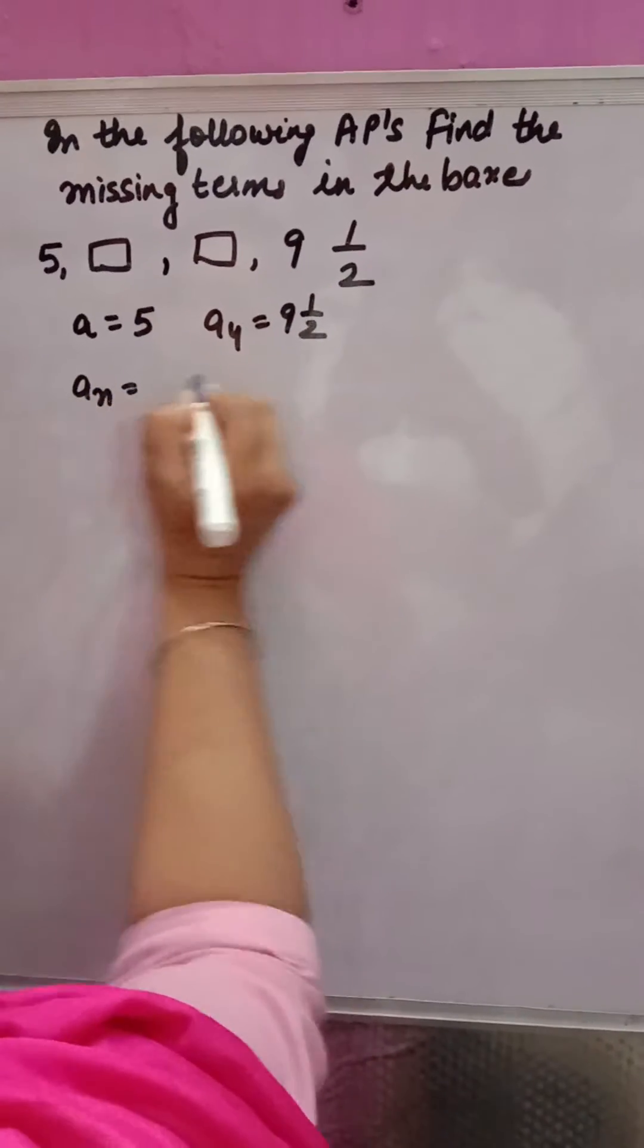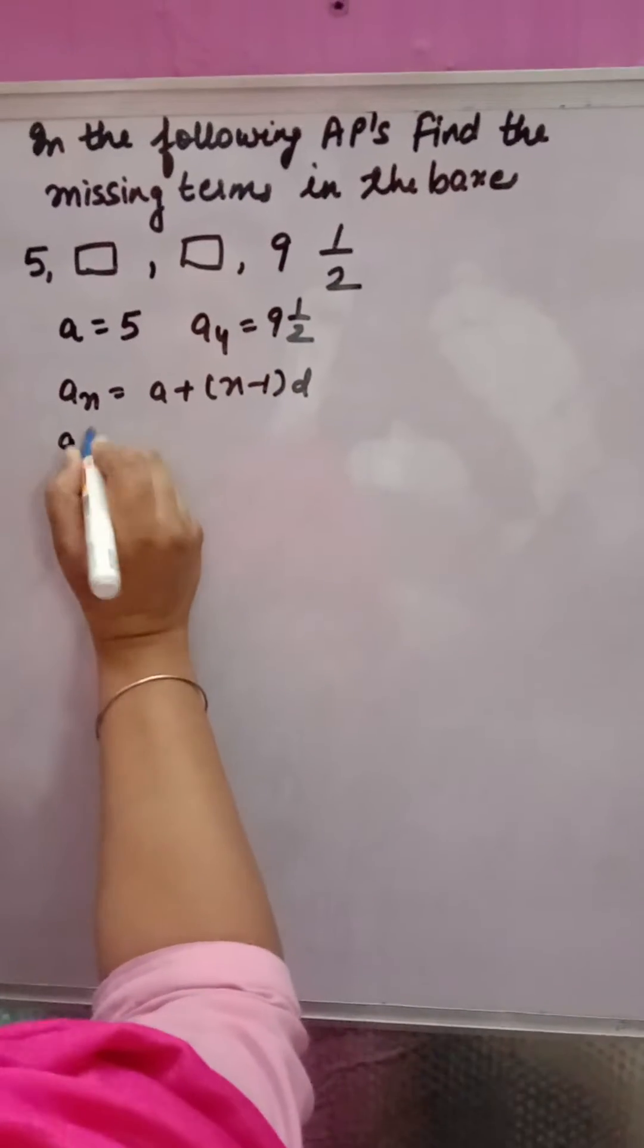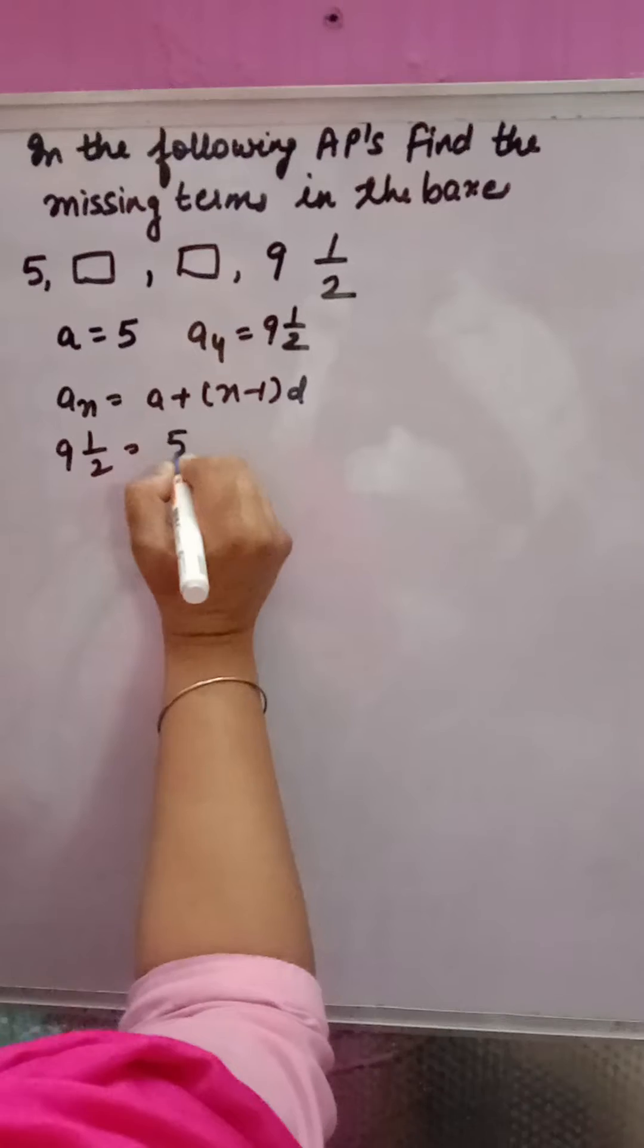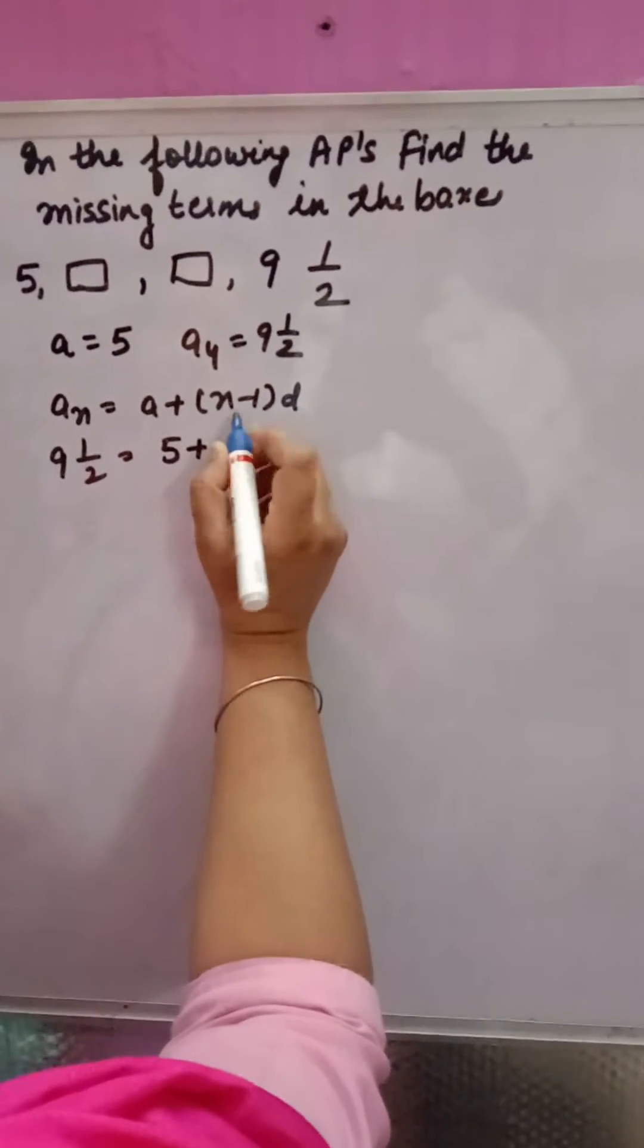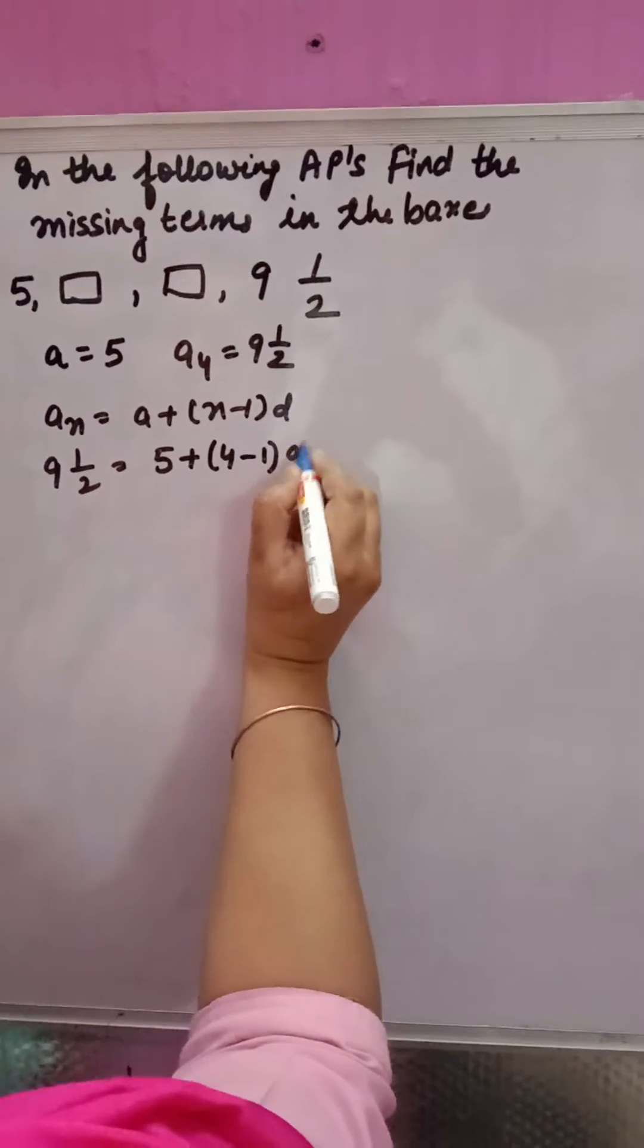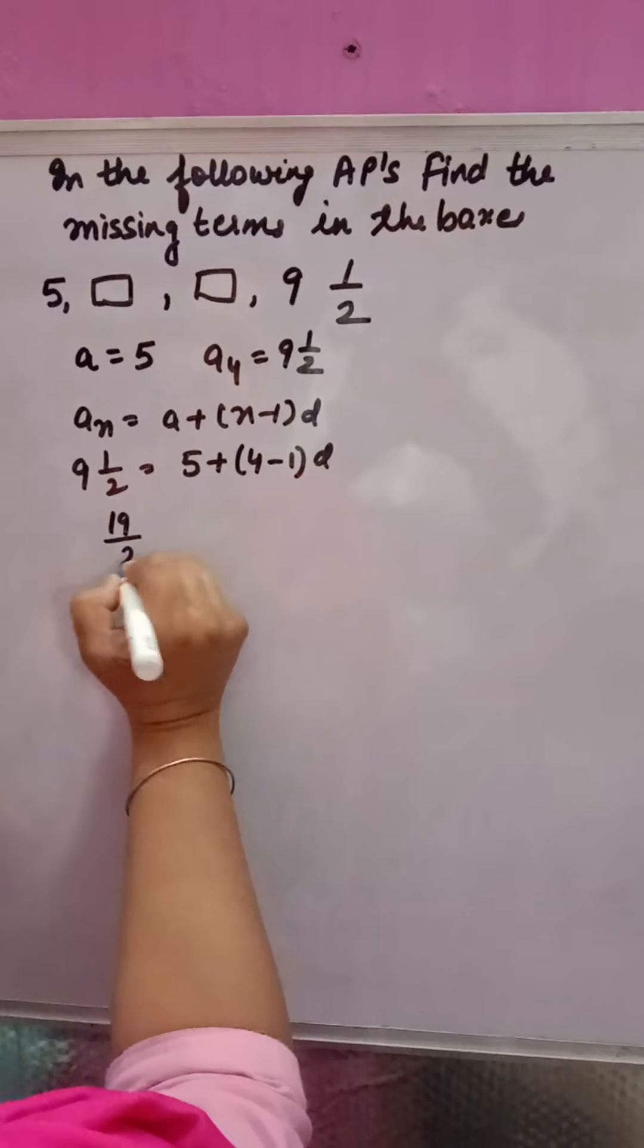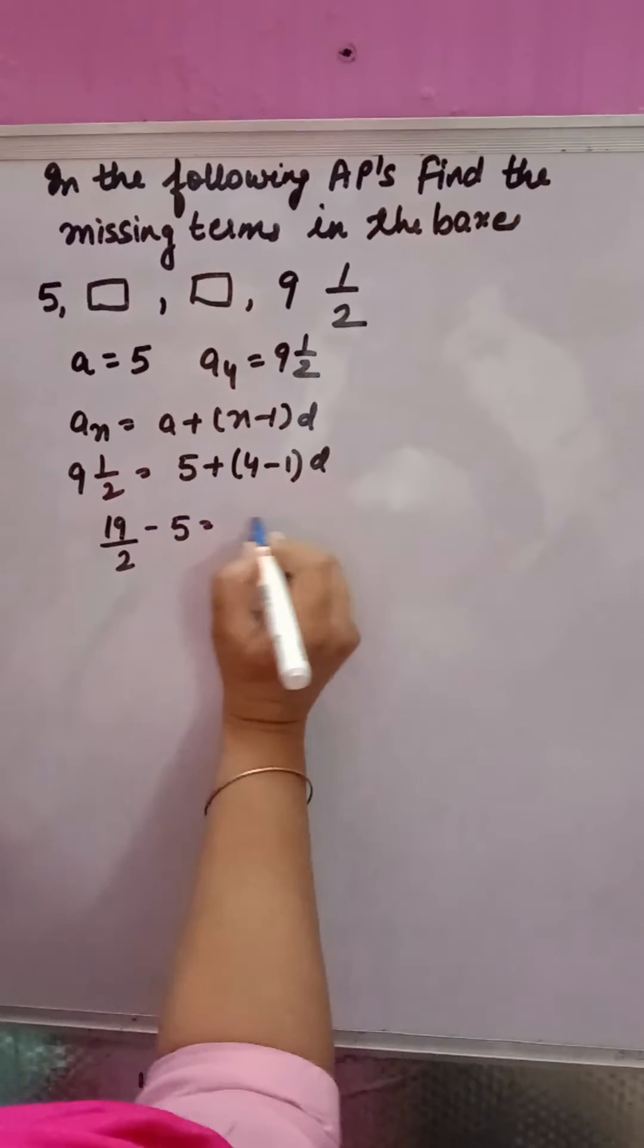Now, the general formula is aₙ = a + (n-1)d. So a₄ is 9½, a is 5, n is 4. For the fourth term, we have a₁, 2, 3, 4 minus 1 into d. 9 and 18 plus 1, 19 by 2 minus 5 is equal to 3d.